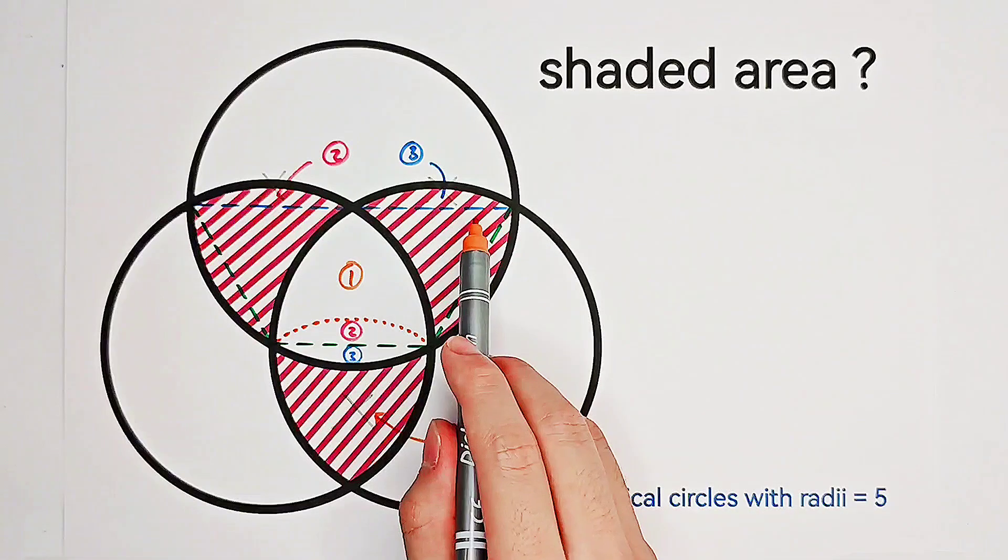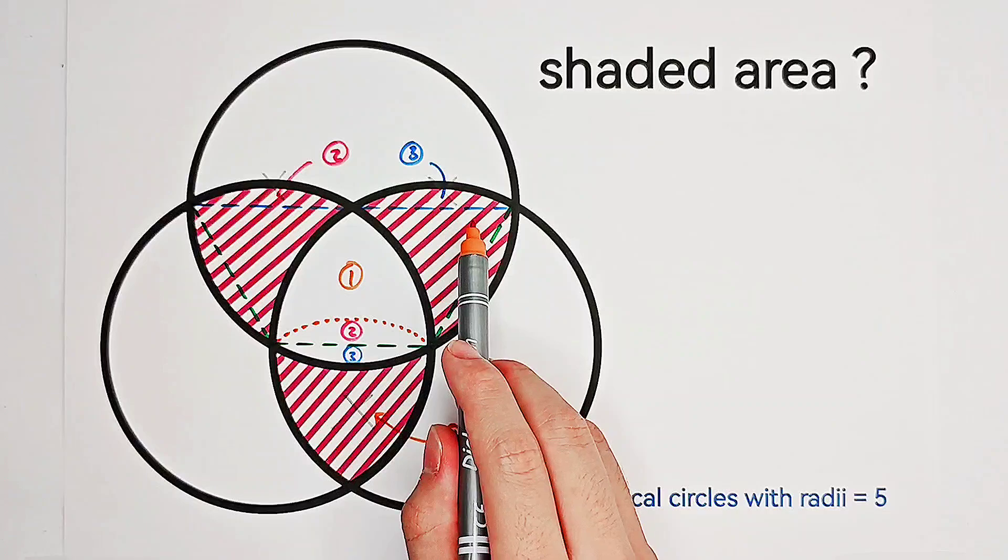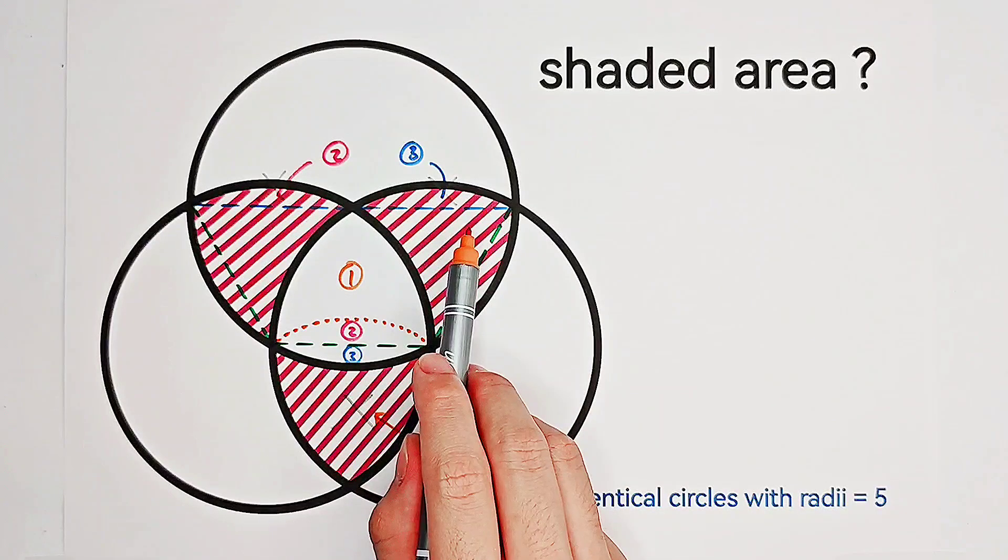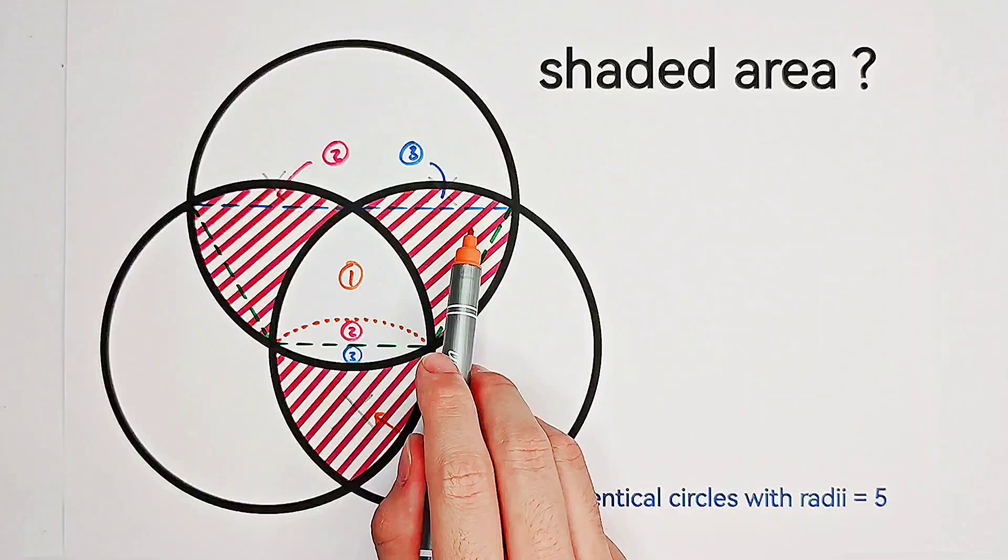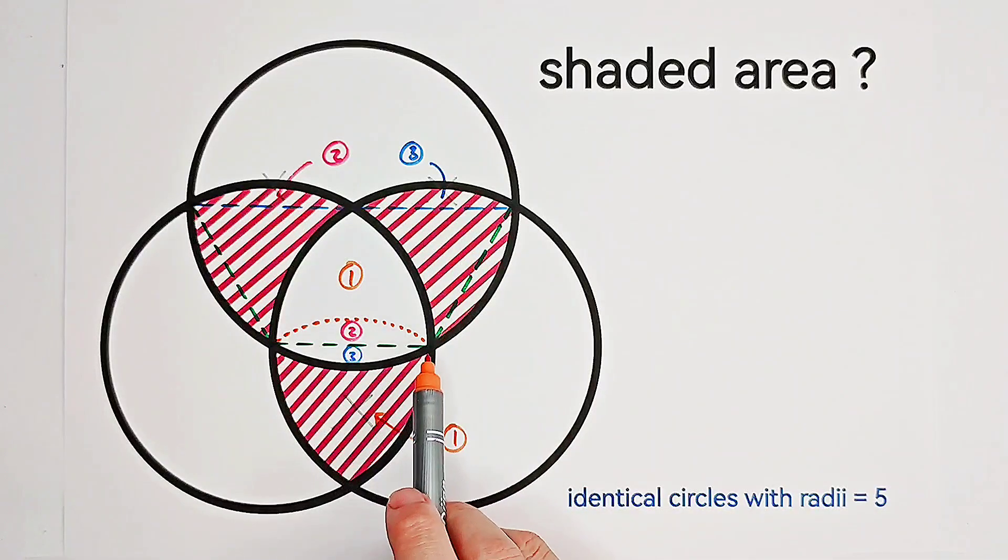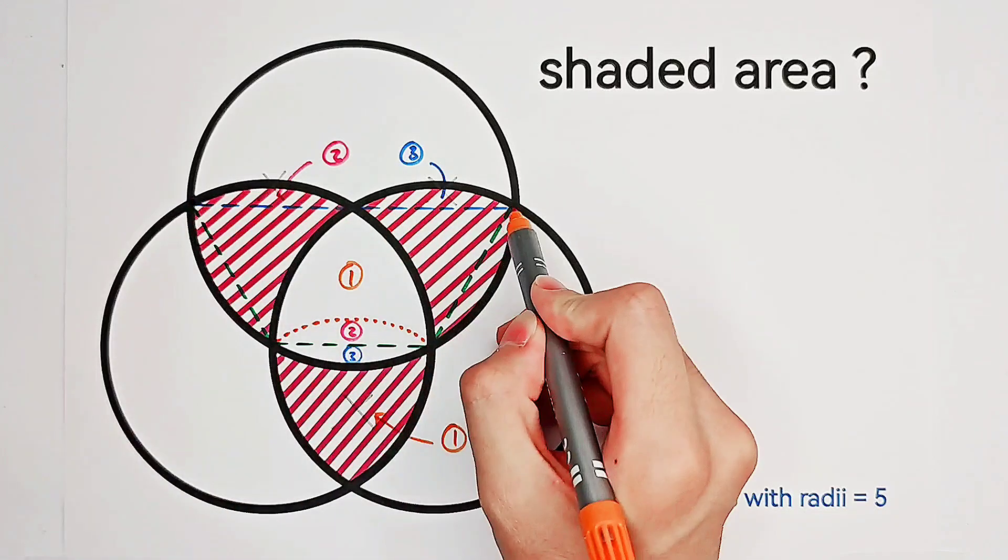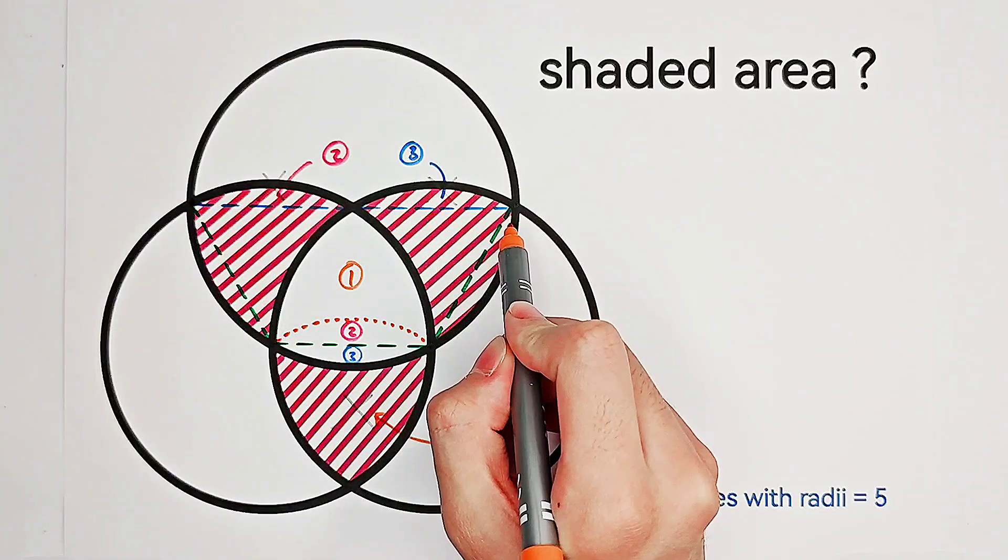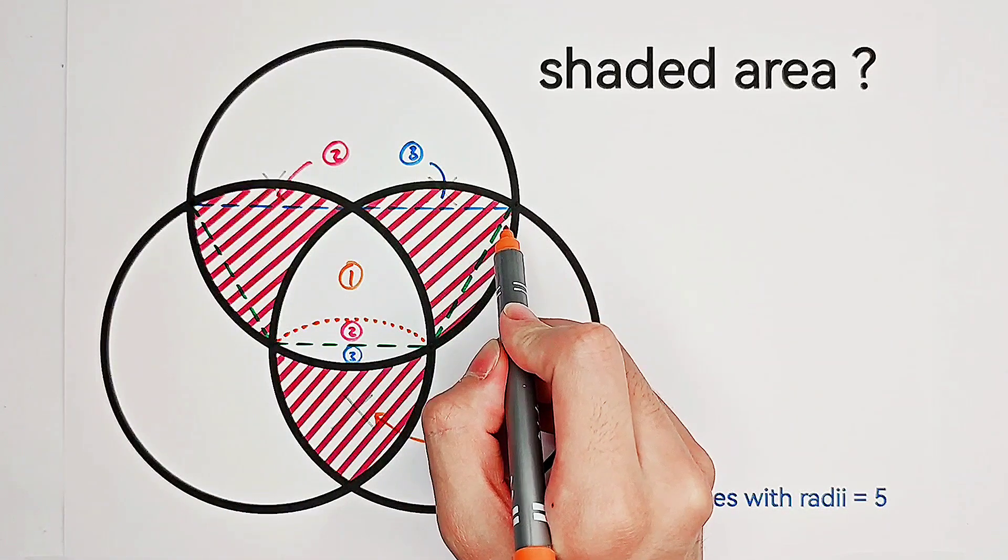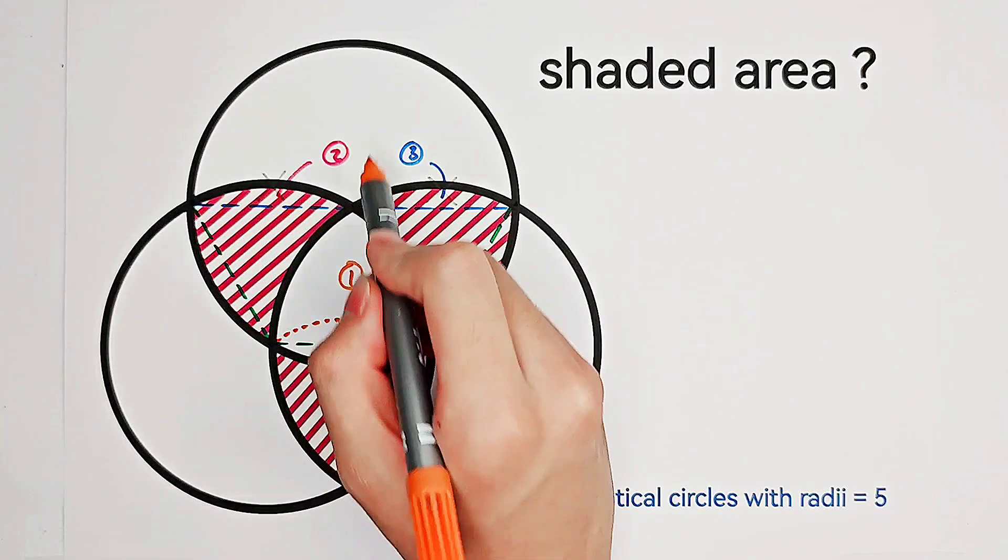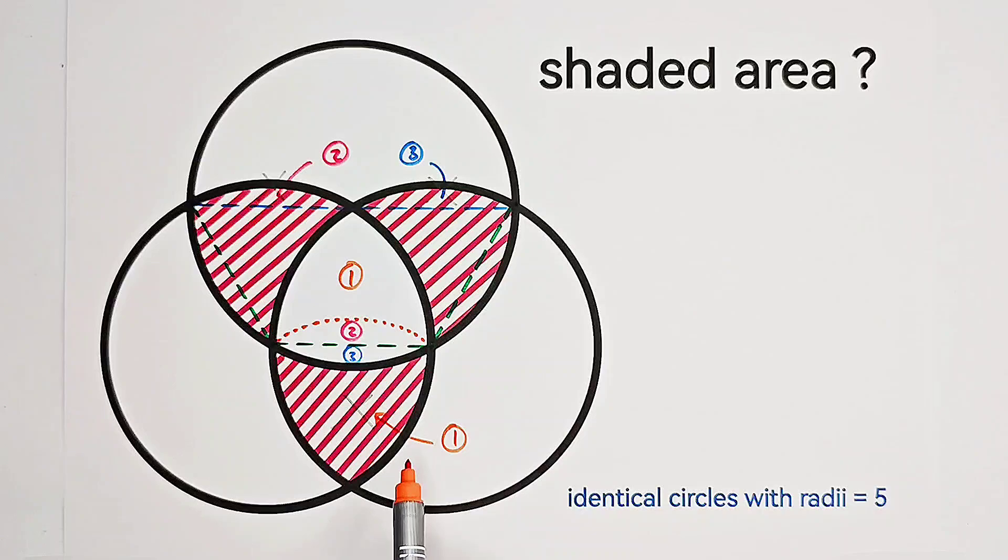This shape is a semicircle. Wow, what a surprise. Maybe you're going to ask, why is this one a semicircle? You see, because of the symmetry, these two points are the two opposite points of a diameter. And this one is the center of this circle. So, the shaded area is just an area of a semicircle.